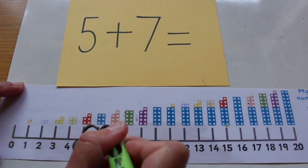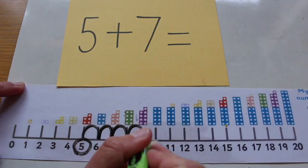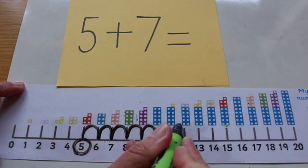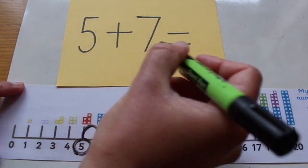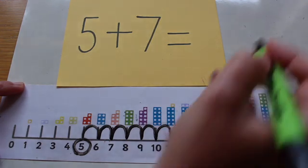1, 2, 3, 4, 5, 6, 7. What did I land on? 12. So 5 add 7 equals 12.